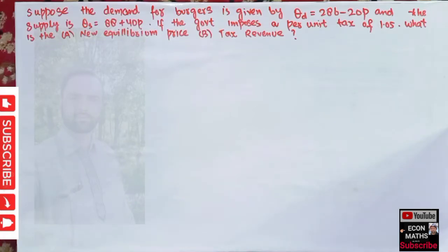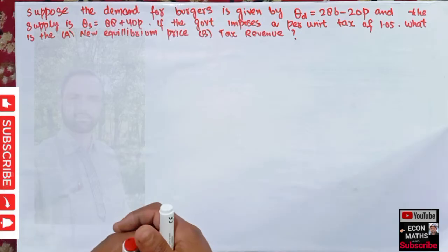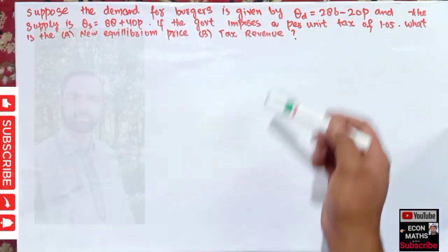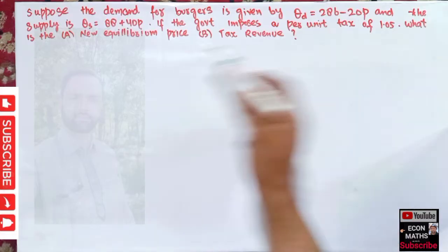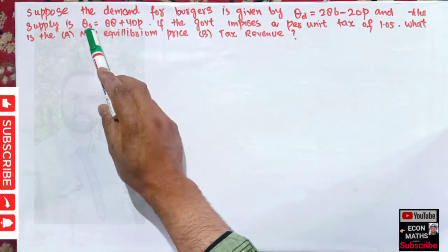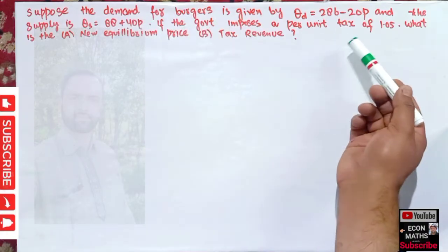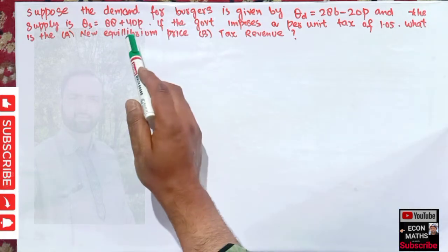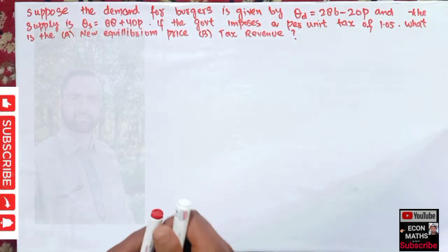Hi, this is Halal. In this video on mathematical economical series, we will try to solve a numerical on finding the tax revenue and the impact of the per unit tax on demand and supply. The question is: suppose the demand for burgers is given by Q = 286 − 20P, where Q is the quantity demanded and P is the price. The supply is given as Q = 88 + 40P. If the government imposes a per unit tax of rupees 1.05, what is the new equilibrium price and the tax revenue?